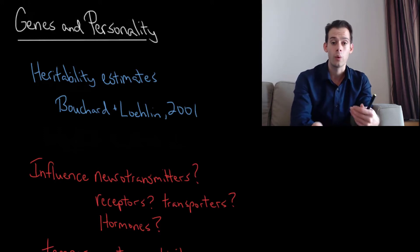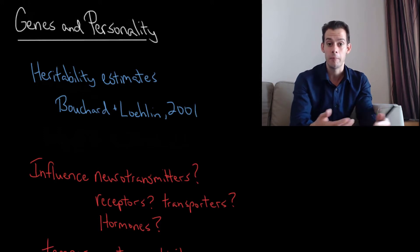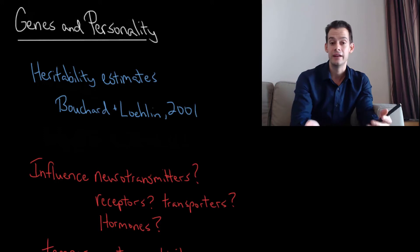But this led us to the question of what's causing differences in these biological systems. A plausible answer might be that genes cause differences in these biological systems and that then leads to different expression of personality. So in this video we're going to look at the relationship between genes and personality.